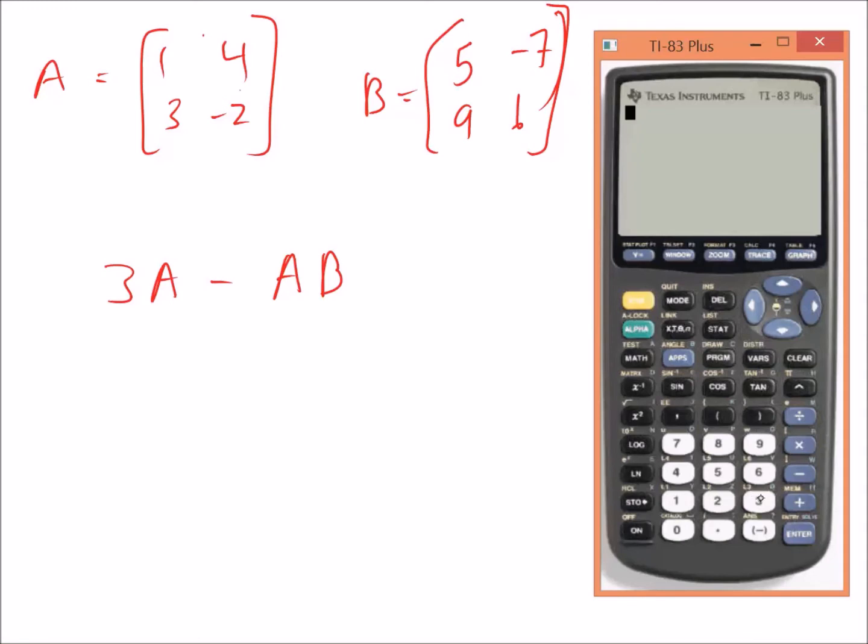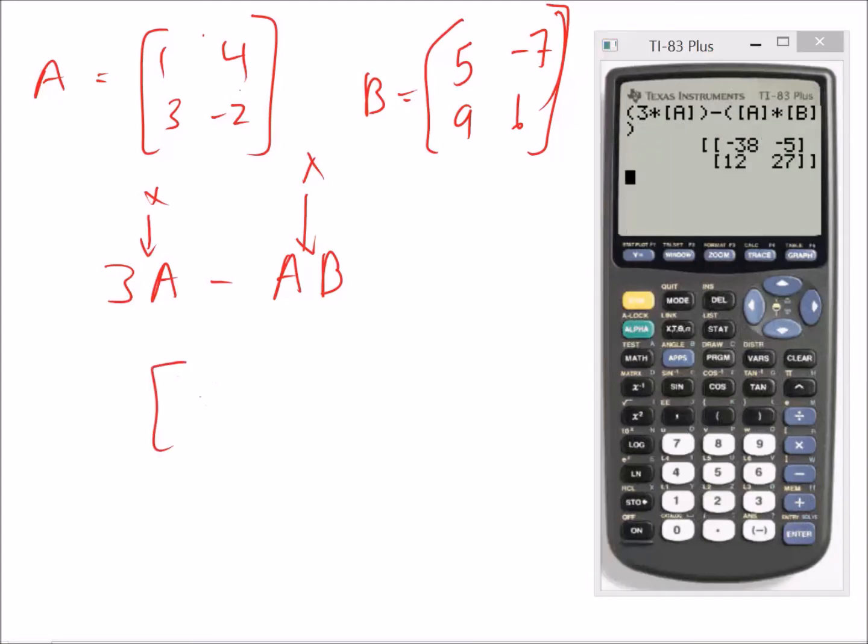So we just type in—just make sure it doesn't know that you want to multiply them together, so you need multiplication symbols here and here, that way the calculator knows you want to multiply. So I'm going to put in parentheses, 3 times A, second matrix A, minus second matrix A times B. And that's going to give us an answer for this extremely long question, but once we put it into our calculator it's quite easy.